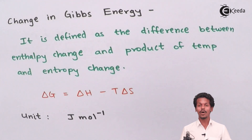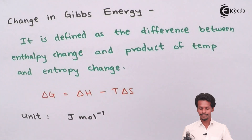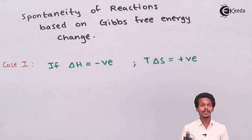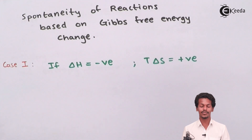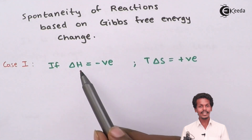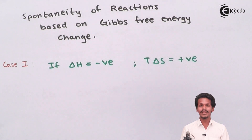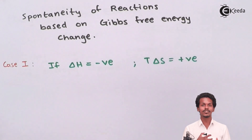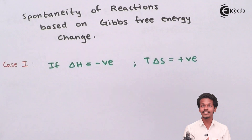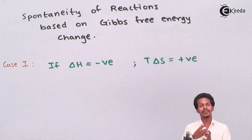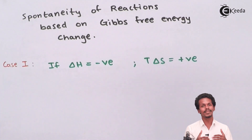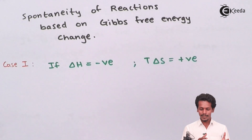Let us see how this equation plays a vital role in understanding whether a reaction is spontaneous or not. For Case 1, suppose ΔH is negative — this indicates the reaction is exothermic and energy has been released from the system. Most exothermic reactions show spontaneous behavior because heat is evolved and the product energy is lower than that of the reactants, making ΔH negative.